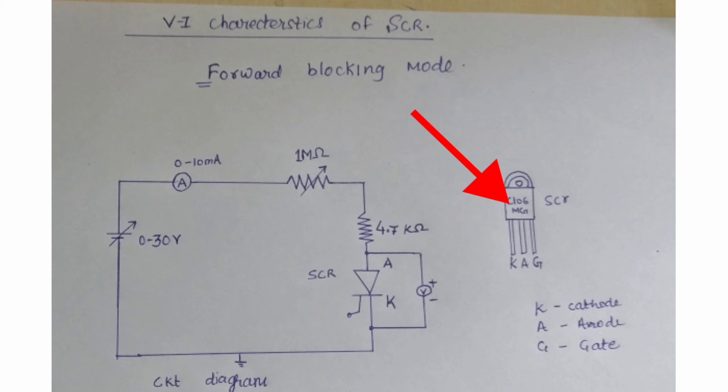You can see our SCR has three terminals. From left to right we have cathode, anode, and gate respectively. We have connected the cathode, given the load to the anode, and the cathode is grounded.